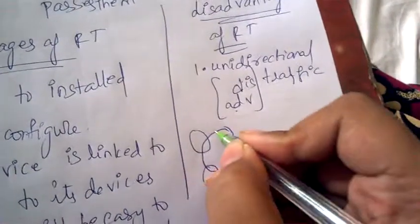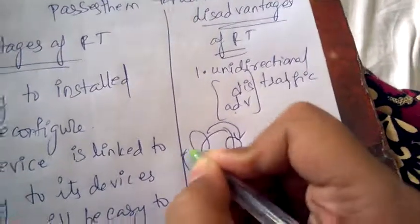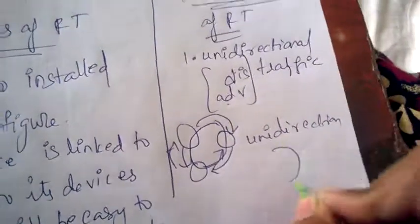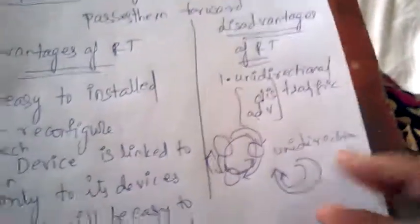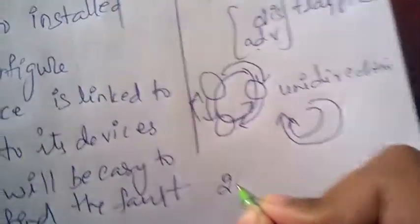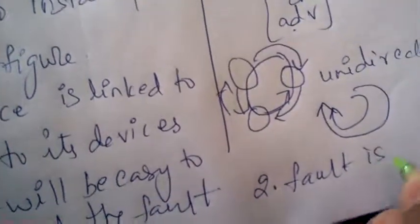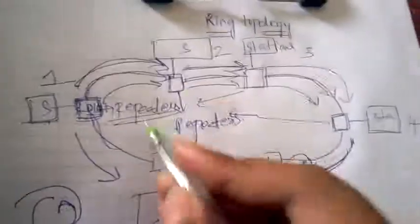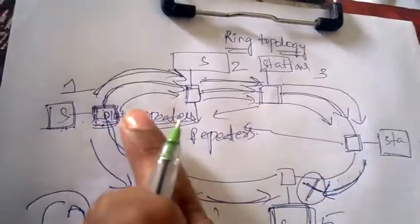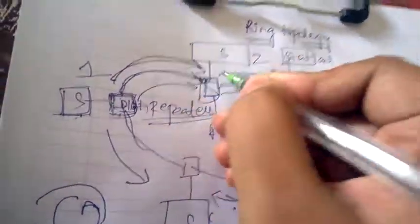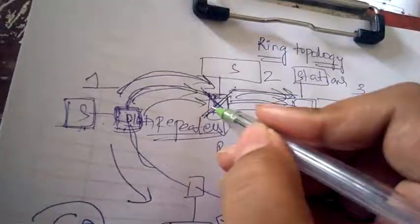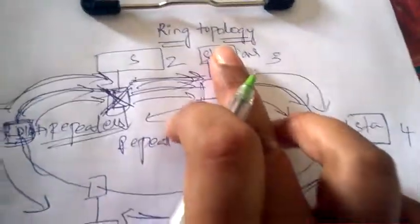Because only one direction is followed, when the same route is used repeatedly there will be traffic congestion. The second disadvantage is fault isolation. If I want to transfer information from station 1 to station 3 and the connection is lost or there is an error in that connection, the transfer of information cannot happen.